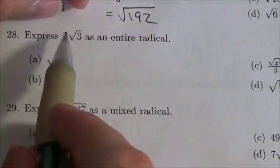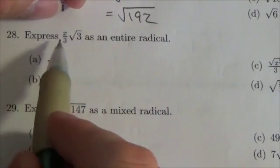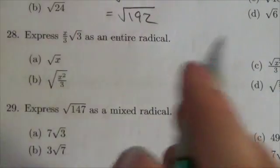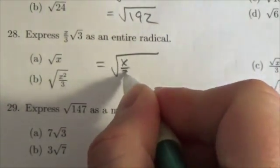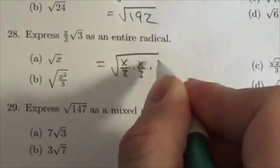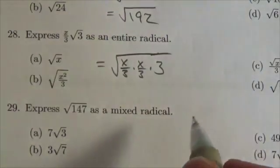So now when I've got something up front here and I want to put it into a radical, I simply need to create two of them in there. So this is going to become the square root of, well this will be x over 3 times x over 3 times the 3 that's already in here.